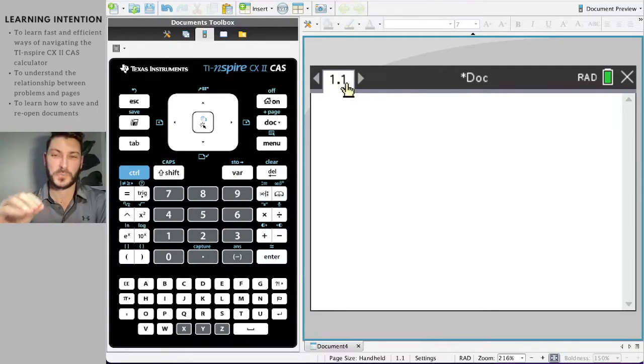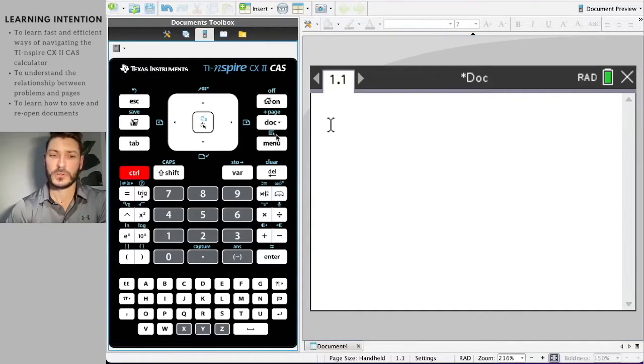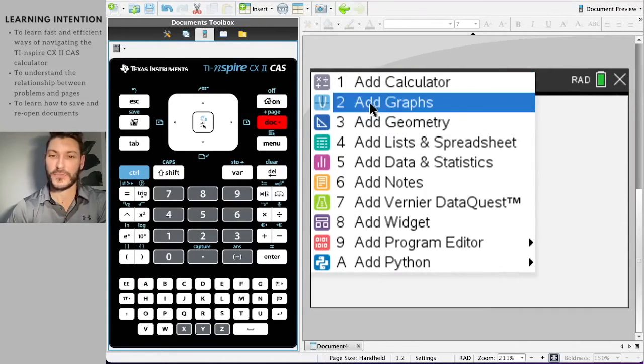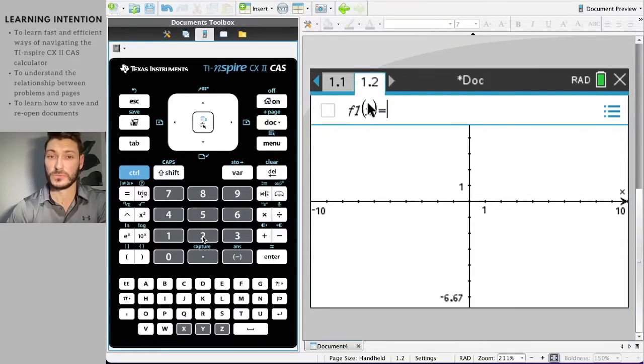And this 1.1 stands for problem dot page. So in each problem, you can think of it as each problem like questioning the test or problem in an exercise. That's the first digit. The point one refers to which page you are within that problem. So we've only got one thing open. So it's 0.1, but if I was to open say a graph for this problem, I would go control doc, because that gives me the plus page. The control gives you all of the blue options on your calculator. So I want to add a page. So control doc, and I want to add a graph. So you can either navigate to it or just click two, and it's going to bring up the graphs menu.